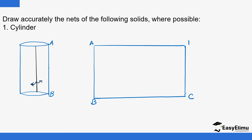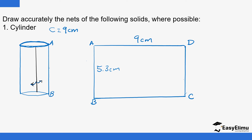So this is C and that is D. The length A, B should also be the same if you can get this length. You can use a string to find that length and then straighten it on a ruler to get the measurement. So if the circumference is, let's say, 9 centimetres, then this length here must also be 9 centimetres. You must observe that.